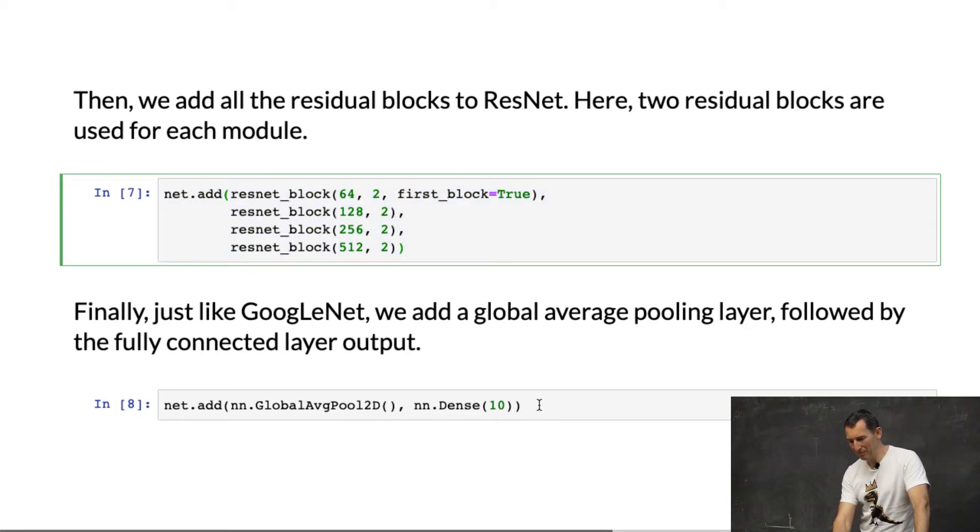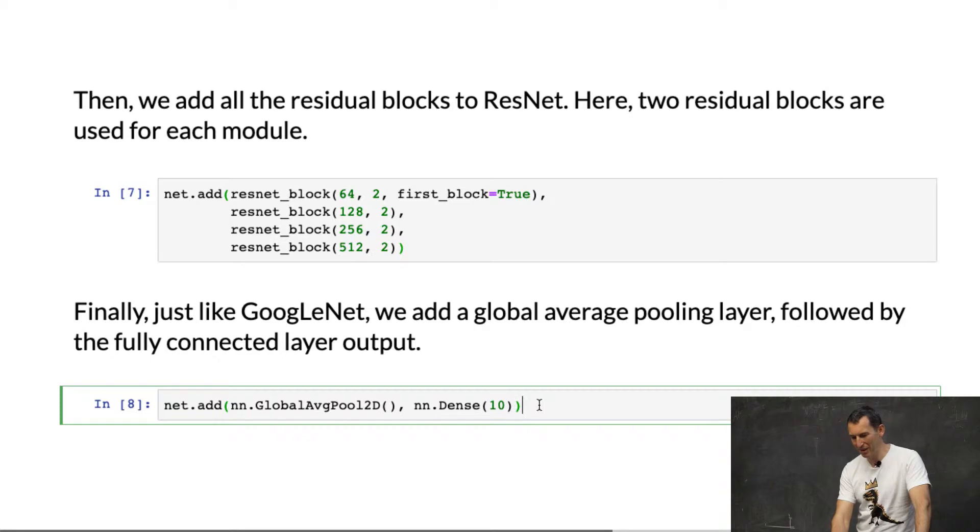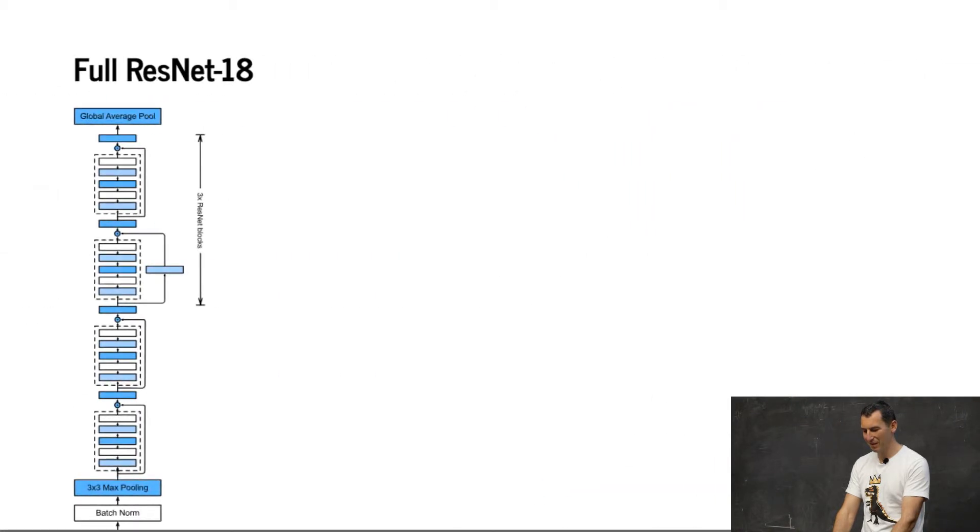And so in the end, you use, just like in GoogleNet, a global average pooling. And of course, since we only have 10 outputs, because we are doing fashion MNIST, the last layer is then dense of 10. If it were more classes, then you'd have more there.